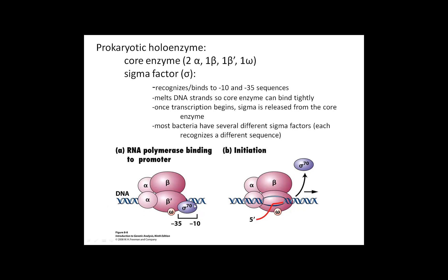The sigma factor binds there and then it recruits the rest of that core enzyme, all of those other subunits. Once all of this is sitting there ready to go, the sigma factor is what actually separates those two strands of DNA to allow transcription to begin.